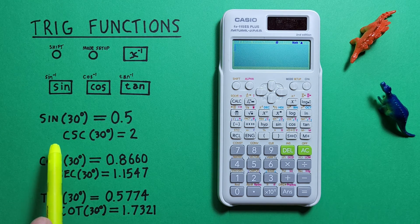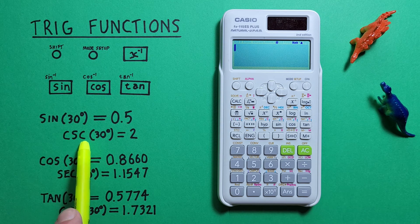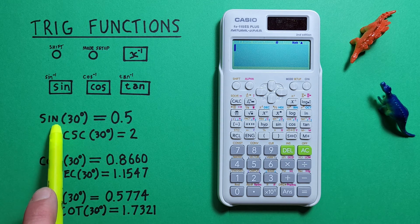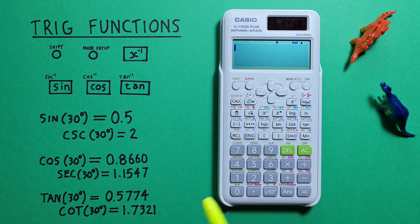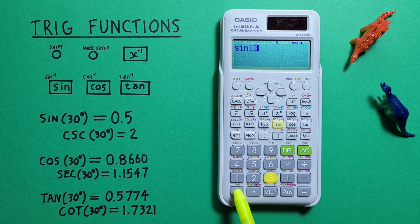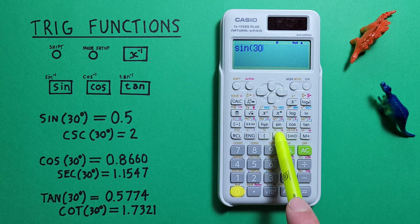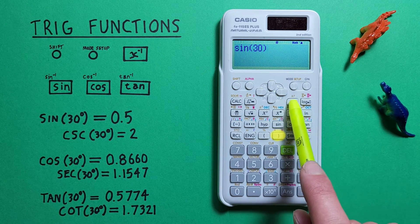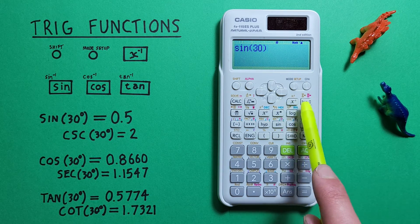So for example if we want to find the cosecant of 30 degrees we need to use sine. So we press sine 30, close our brackets, and then hit the inverse key, that's this x to the power of minus 1 here.